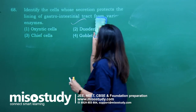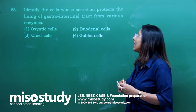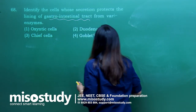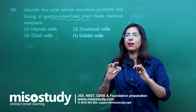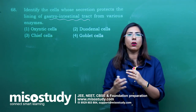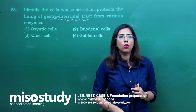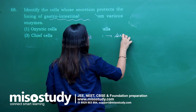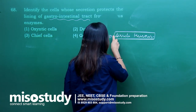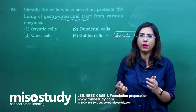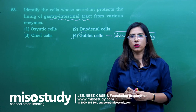Question number 68 — identify the cells whose secretion protects the lining of the gastrointestinal tract from various enzymes. The stomach has acidic pH and enzymes, so protection of the mucosa layer is important. This happens because of goblet cells. Goblet cells secrete mucus, and mucus helps in protection. The correct option is fourth.